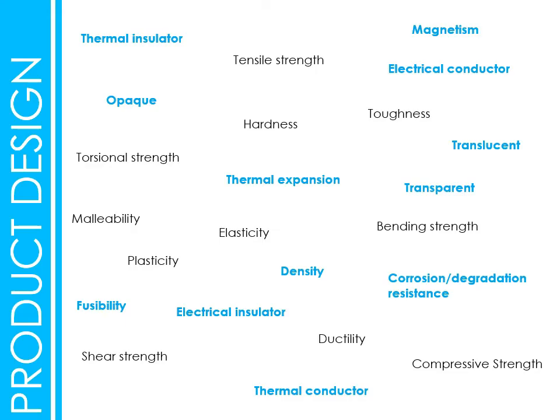Opaque means you can't see through it at all — if a material is opaque, it's coloured or no light comes through it. Thermal expansion is all about how much a material expands as it's heated. Carbon fibre is a good example — it doesn't expand very much under heat, which is why it's used on F1 engines, where you don't want high temperatures changing the shape of precisely manufactured components.